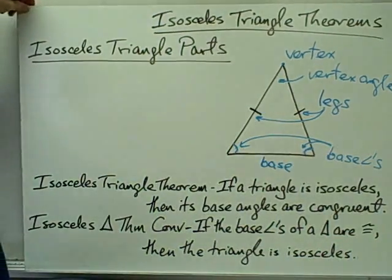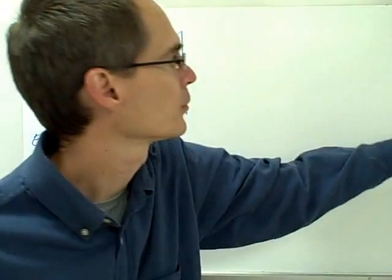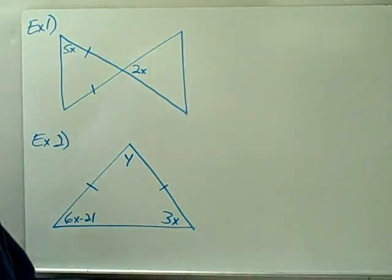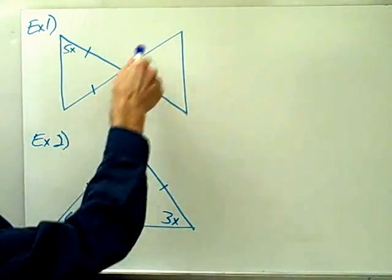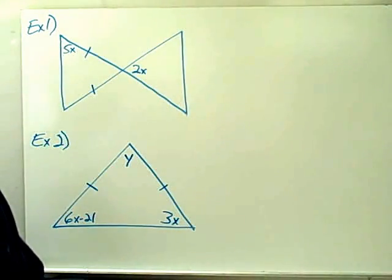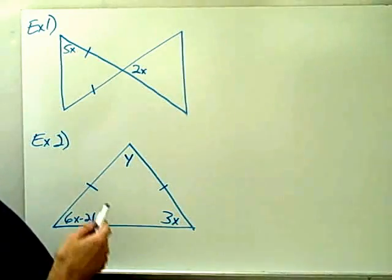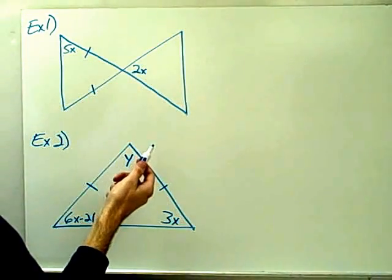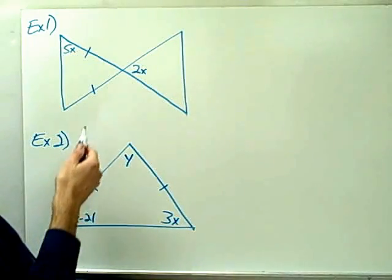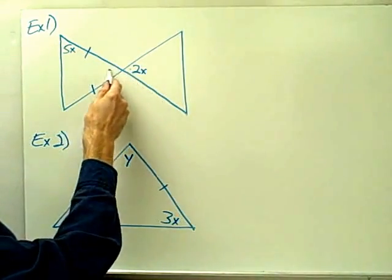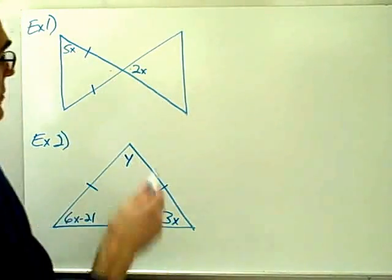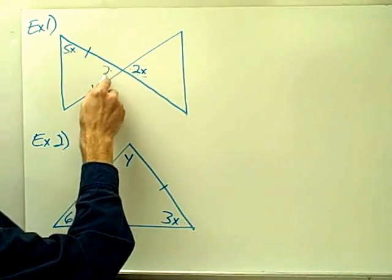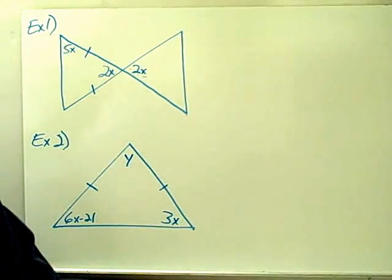Now let's take a look at some problems that have to do with isosceles triangles. Example number one: I have two triangles connected together in the middle. At first it looks like I might not have enough information to solve for x, but since these two angles are vertical angles, I know that vertical angles are congruent. So if this angle has a measure of 2x, this angle must also have a measure of 2x.